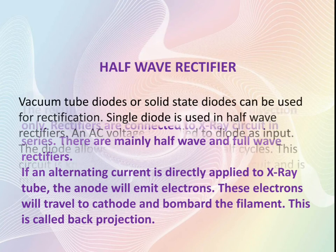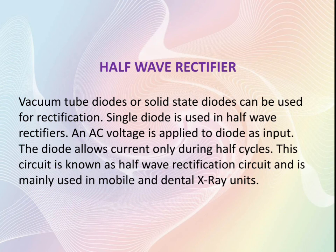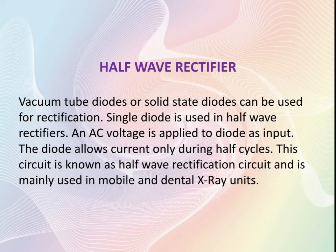In rectifiers we use certain types of diodes — generally vacuum tube diodes or solid state diodes. In a half wave rectifier we use only a single diode, whereas in full wave rectifiers we can use two or more diodes. In a half wave rectifier we supply an AC voltage to the diode as input, and the diode allows current only during the positive half cycles. Because only half of the alternating current is converted into direct current, this process is known as half wave rectification. Half wave rectifiers are mainly used in mobile and dental x-ray units.